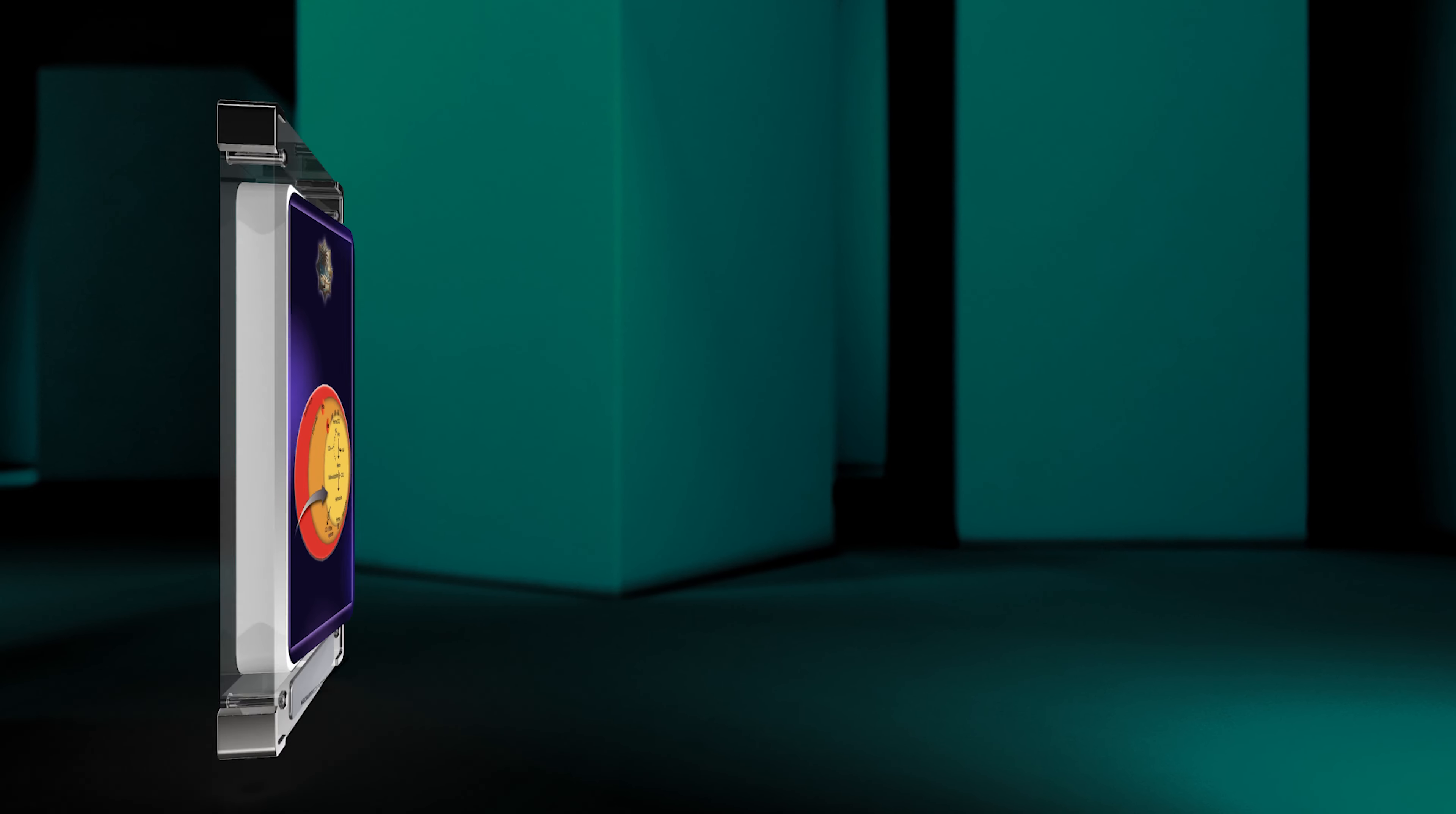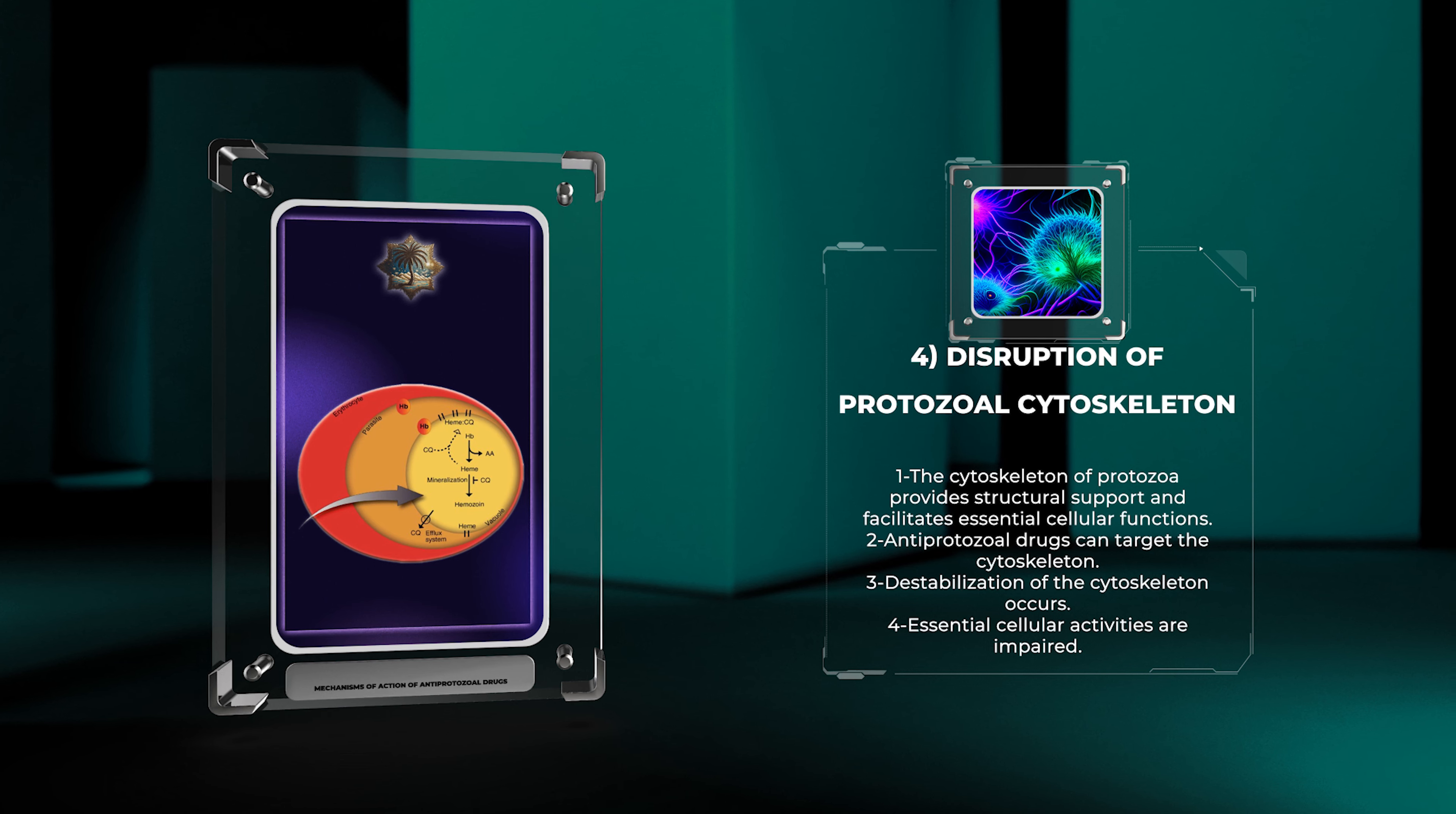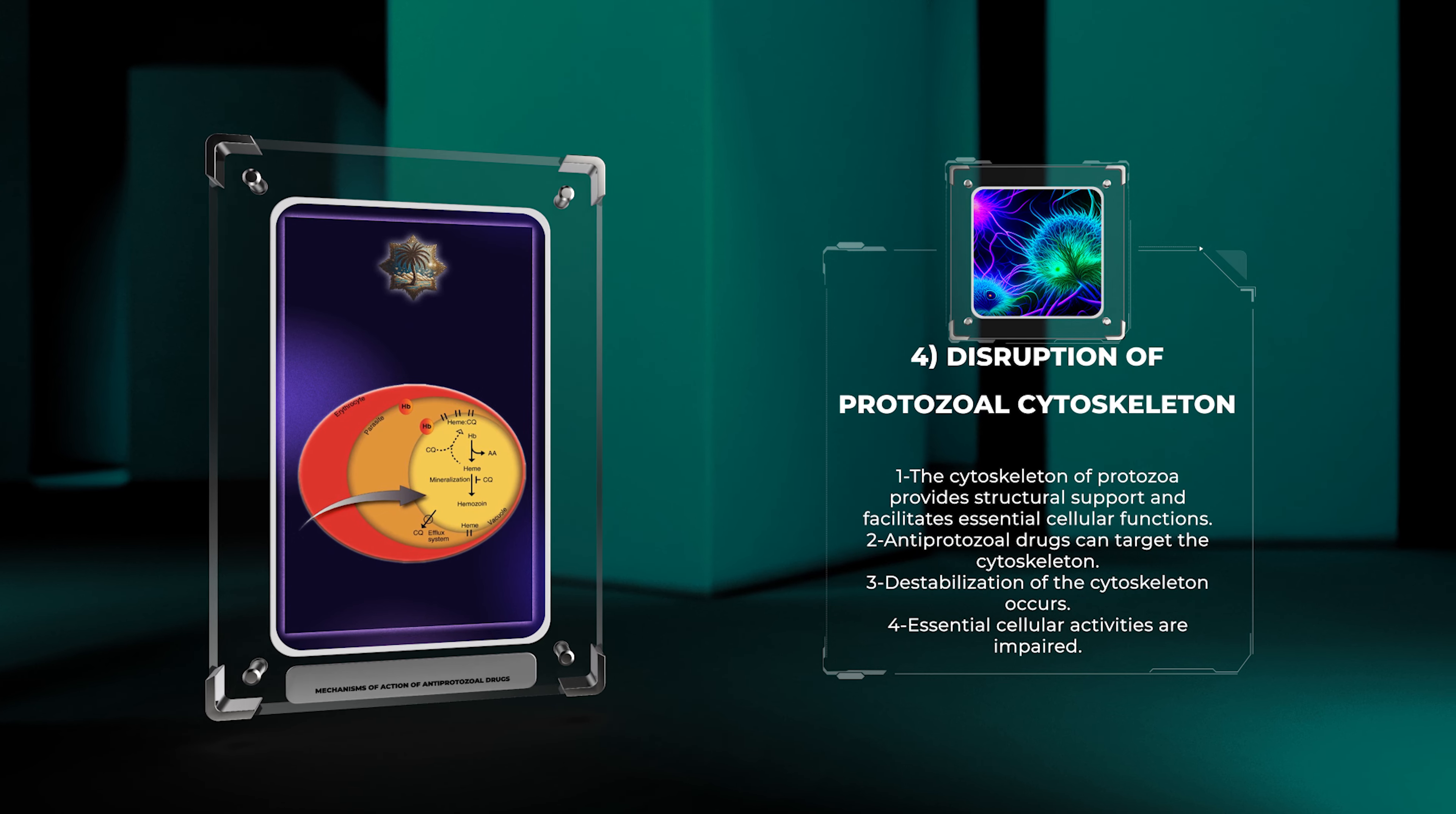The cytoskeleton of protozoa provides structural support and facilitates essential cellular functions, including motility and division. Antiprotozoal drugs can target the cytoskeleton, leading to its destabilization and subsequent impairment of essential cellular activities. By interfering with the proper assembly or disassembly of cytoskeletal components, these drugs disrupt the internal architecture of protozoa, impeding their ability to invade host cells or move within tissues.